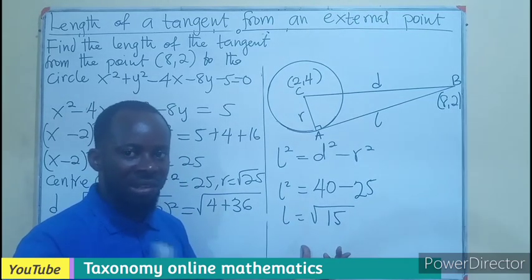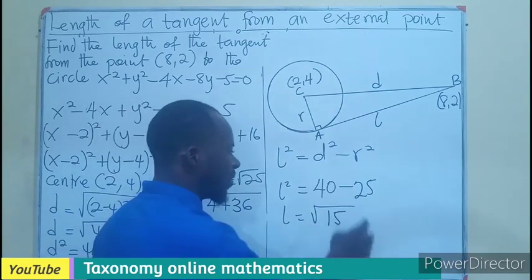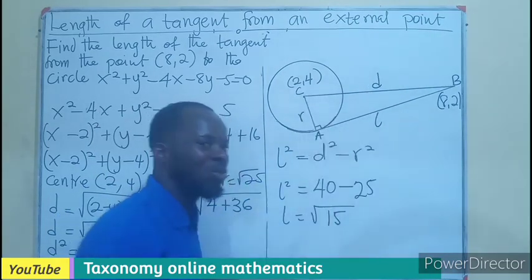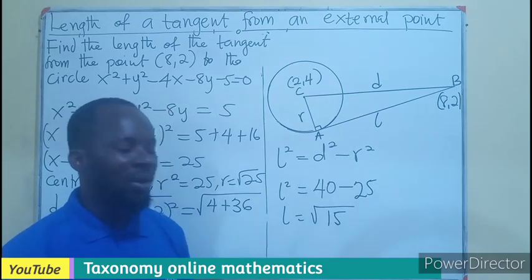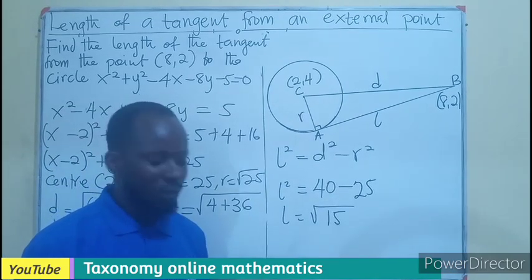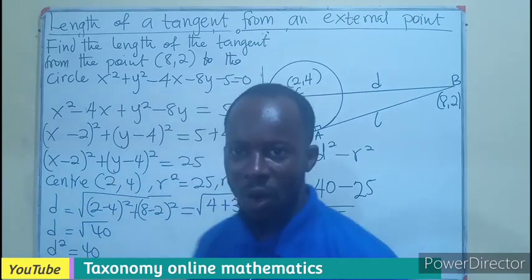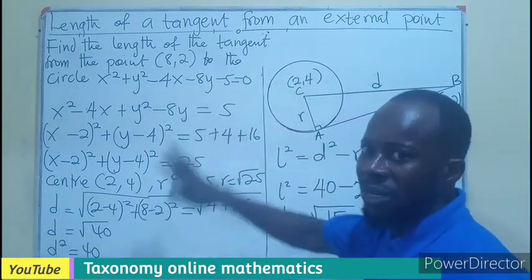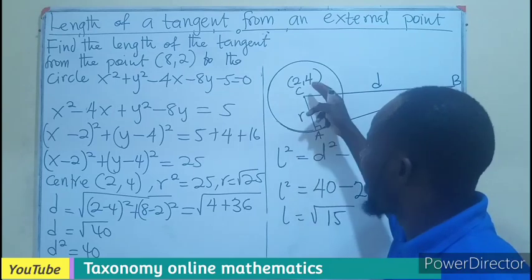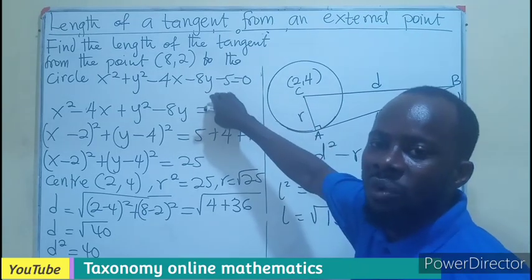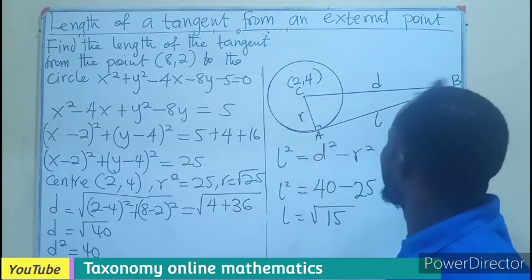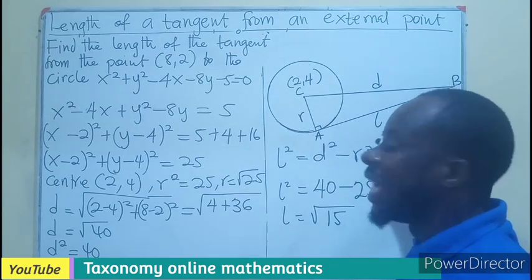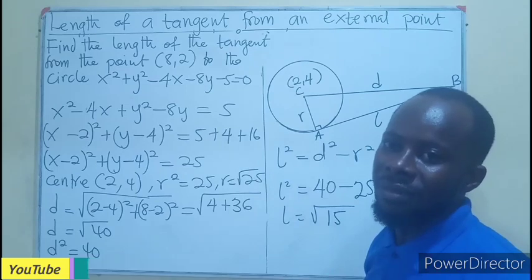This could be somewhere closer to 4, or we can say 3 point something. So whatever unit of dimensions we are having, this could be root 15, or with the use of a calculator we can get a decimal. So if we check carefully, all that we need from this is the radius and the center from the equation of a circle. Getting that, find the distance, and finding the length becomes easy.